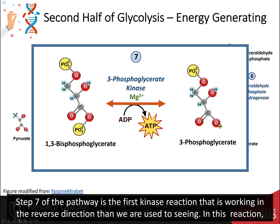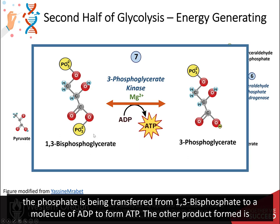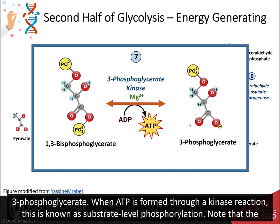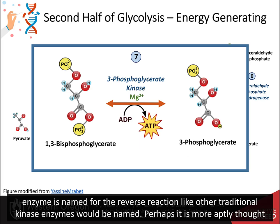Step 7 of the pathway is the first kinase reaction that is working in the reverse direction than we are used to seeing. In this reaction, the phosphate is being transferred from 1,3-bisphosphoglycerate to a molecule of ADP to form ATP. The other product formed is 3-phosphoglycerate. When ATP is formed through a kinase reaction, this is known as substrate-level phosphorylation. Note that the enzyme is named for the reverse reaction, like other traditional kinase enzymes would be named.